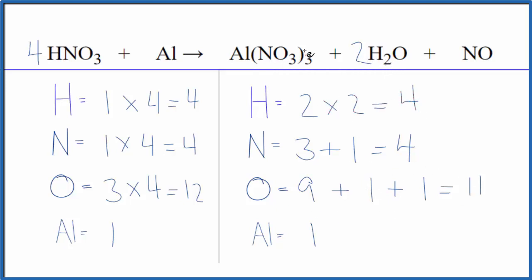Now for the oxygens. Three times three is nine. One times two. That's going to be two plus one. That equals 12.